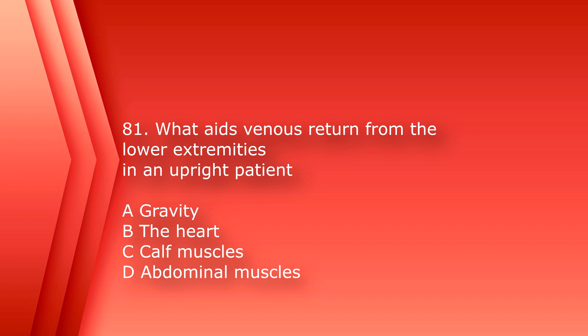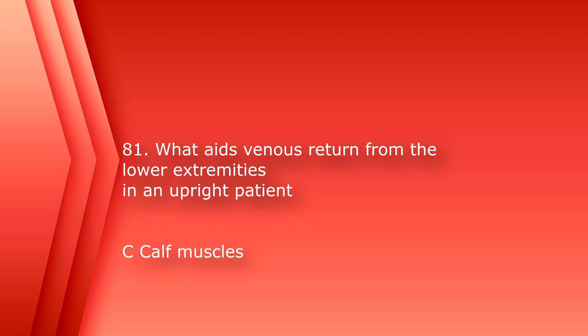Number 81: what aids venous return from the lower extremities in an upright patient? A. Gravity. B. The heart. C. Calf muscles. Or D. Abdominal muscles. The answer is C. Calf muscles.